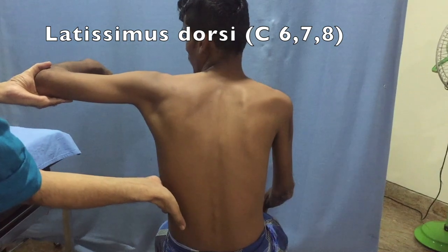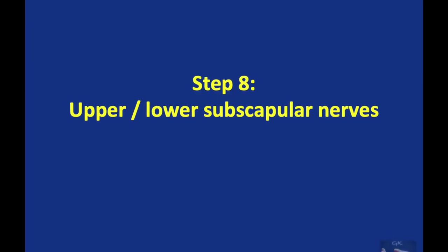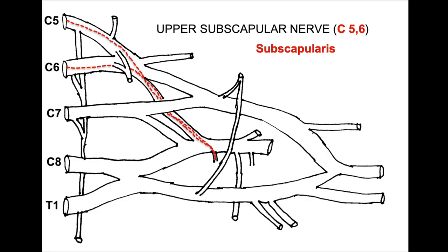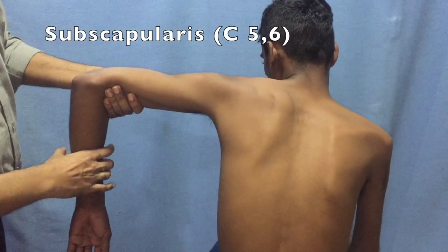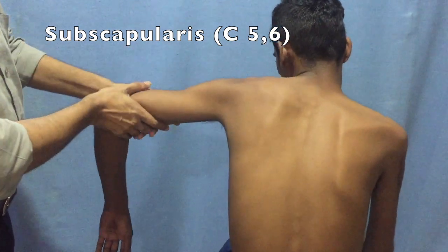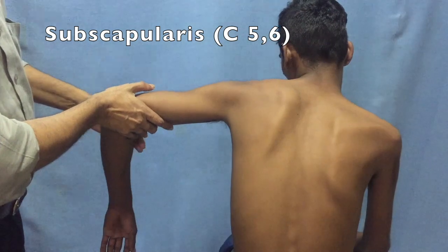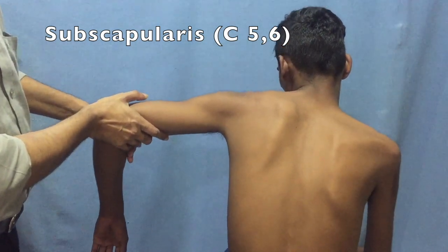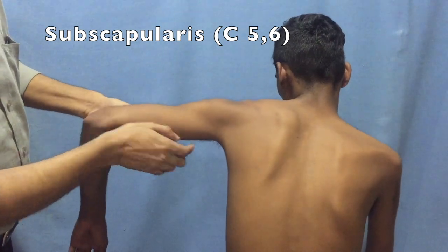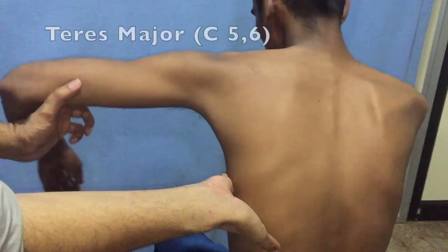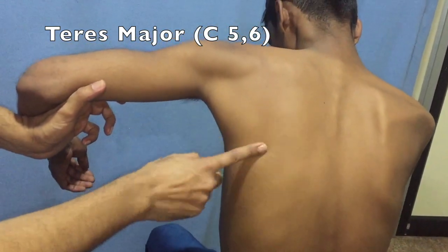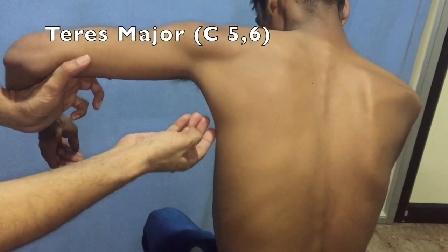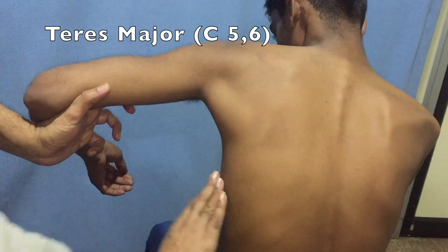A better test for the latissimus dorsi is the cough reflex test: the examiner places hands on both sides of the flank and asks the patient to cough; the contraction can be felt when the latissimus dorsi is active. The upper and lower subscapular nerves are then tested. The upper subscapular nerve supplies the subscapularis and the lower one supplies the teres major. The subscapularis is examined with the shoulder abducted to 90 degrees, supported by the examiner's hand, and the patient asked to move the arm backwards and upwards; movement indicates M3 grade. The teres major is best felt by palpating the muscle lateral to the lower border of the scapula during subscapularis and latissimus dorsi testing.